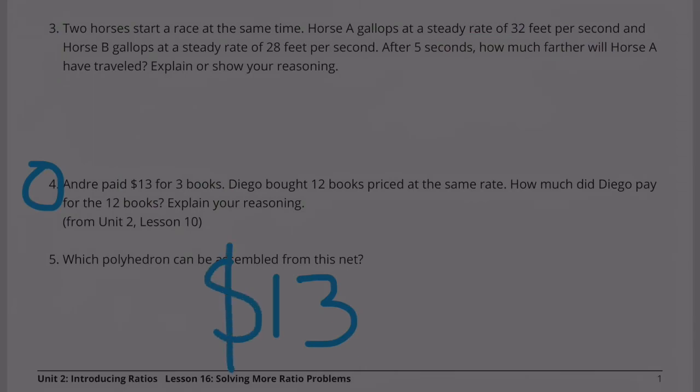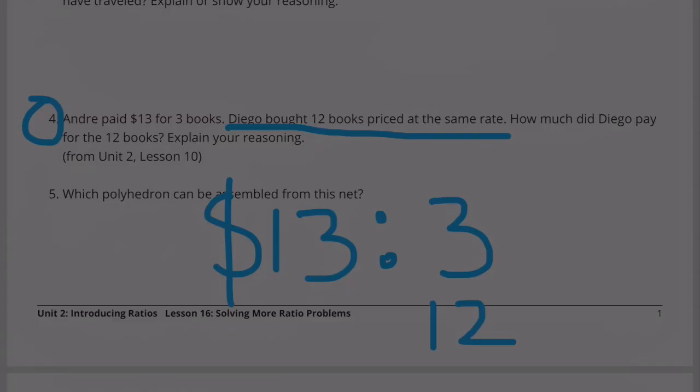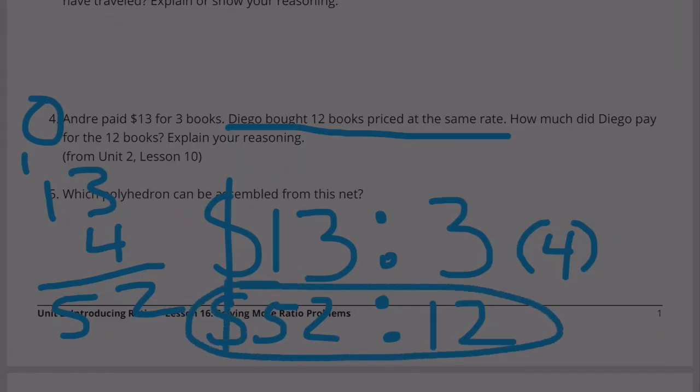$13 for 3 books. Diego bought 12 books at the same rate. We need to turn the 3 into a 12 by multiplying it by 4. 3 times 4 is 12. Now we multiply the 13 times 4. Diego bought 12 books for $52.